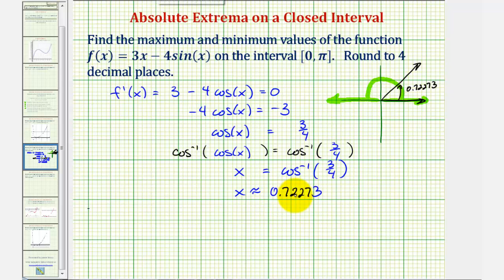So because we have one critical number, we'll now evaluate the function at the critical number as well as the two endpoints. So we'll now find f(0.72273), f(0), and f(pi). The smallest of these function values will be the absolute minimum or minimum. And the largest function value will be the maximum or absolute maximum. Let's go ahead and find these function values on the next slide.